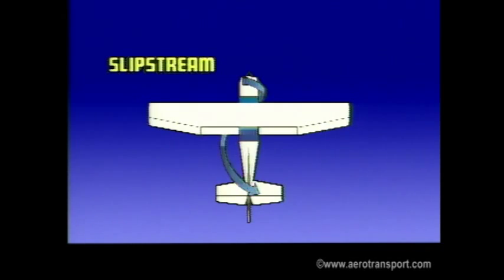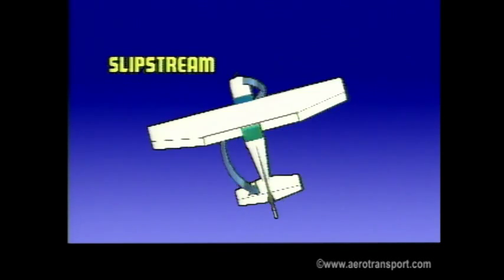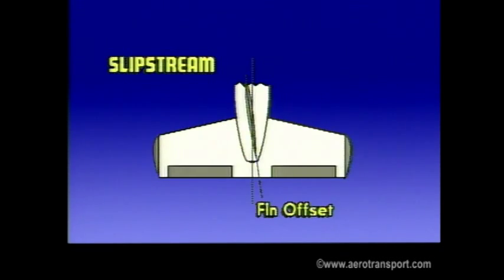Slipstream is the mass of air pushed backwards by the propeller. As this air moves back, it strikes the fin or rudder of the aircraft, pushing it to the right. This affects the directional and lateral balance of the aircraft and is compensated for by offsetting the fin for normal cruising flight. This balance will be upset when engine power is changed.